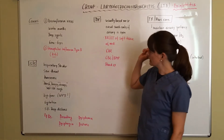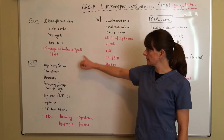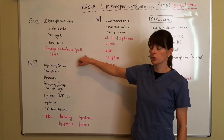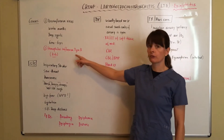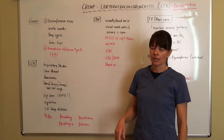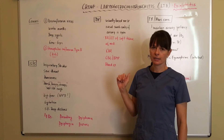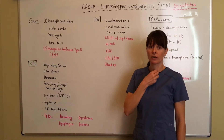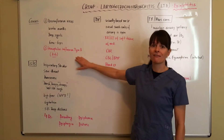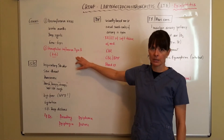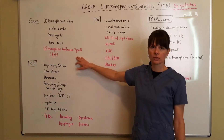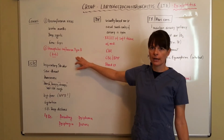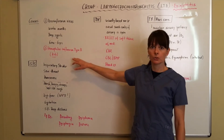Epiglottitis is a little bit different — it's caused by a bacteria called HiB, Haemophilus influenzae type B. Because this can be such a significant problem with airway obstruction, we now vaccinate children against HiB. So if the patient is on a normal vaccination schedule, the risk for them to get HiB should be relatively low.